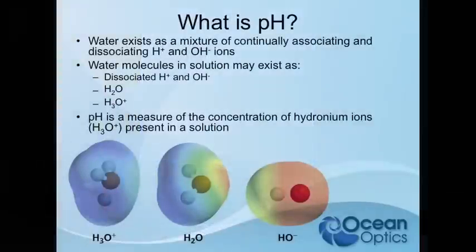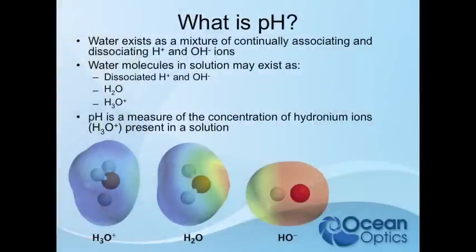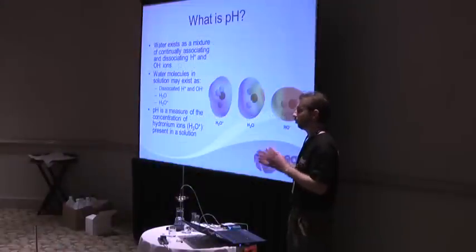So what is pH? Water exists as a combination — it's continually associating and dissociating hydroxyl and hydronium ions, so it's not just this static H2O. We do have dissociation in and out. We can have our usual H2O molecule, but that can split into an OH and a hydrogen, and then it's H3O+. So pH is a measure of the concentration of these hydronium ions in solution — we're trying to see how much, one way or the other, this equilibrium is leaning.